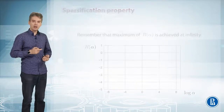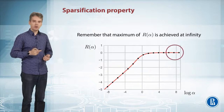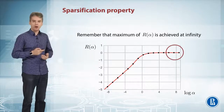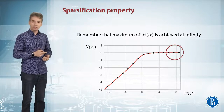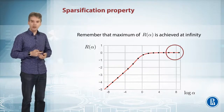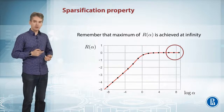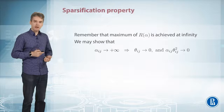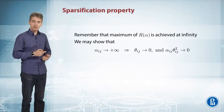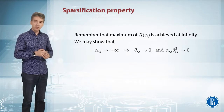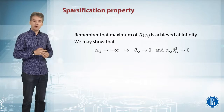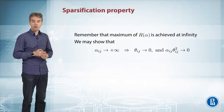But before we proceed, let us examine the properties of our regularizer and its dependence on α. We remember that we may approximate it with a smooth differentiable function, and we see that the maximum value of this regularizer is achieved when α goes to plus infinity. This means the second term of our ELBO encourages larger values of α. And we may easily prove that if αi goes to plus infinity, then the corresponding θi — the mean in our variational approximation — converges to zero in such a way that αi times θi² also converges to zero.